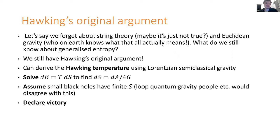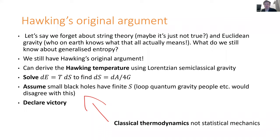So we declare victory — we've derived the Bekenstein-Hawking entropy, that S equals A over 4G. Why is this not done? It's because all of this is about deriving an entropy in the sense of classical thermodynamics, not in the sense of statistical mechanics. There's no counting over states here, no rho log rho — nothing like that whatsoever. All there is is dE equals T dS, which people have been using for the better part of a century before anyone connected it to entropy in the modern statistical sense.